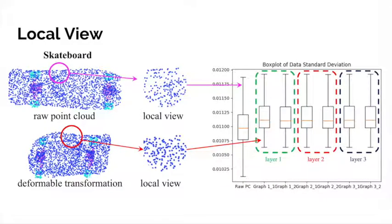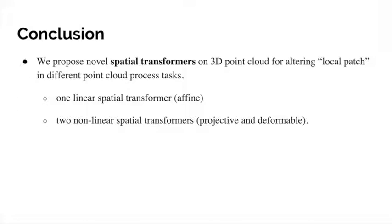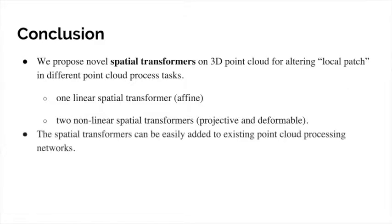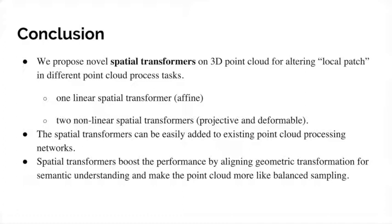In conclusion, we propose novel spatial transformers on a 3D point cloud for altering the local patch in different point cloud processing tasks. We propose one linear spatial transformer, the affine transformer, and two non-linear spatial transformers, the projective and deformable transformers. Spatial transformers can be easily added to existing point cloud processing networks. Transformers boost the performance by aligning geometric transformation for semantic understanding. They also help improve the performance by making the point cloud more like balanced sampling.